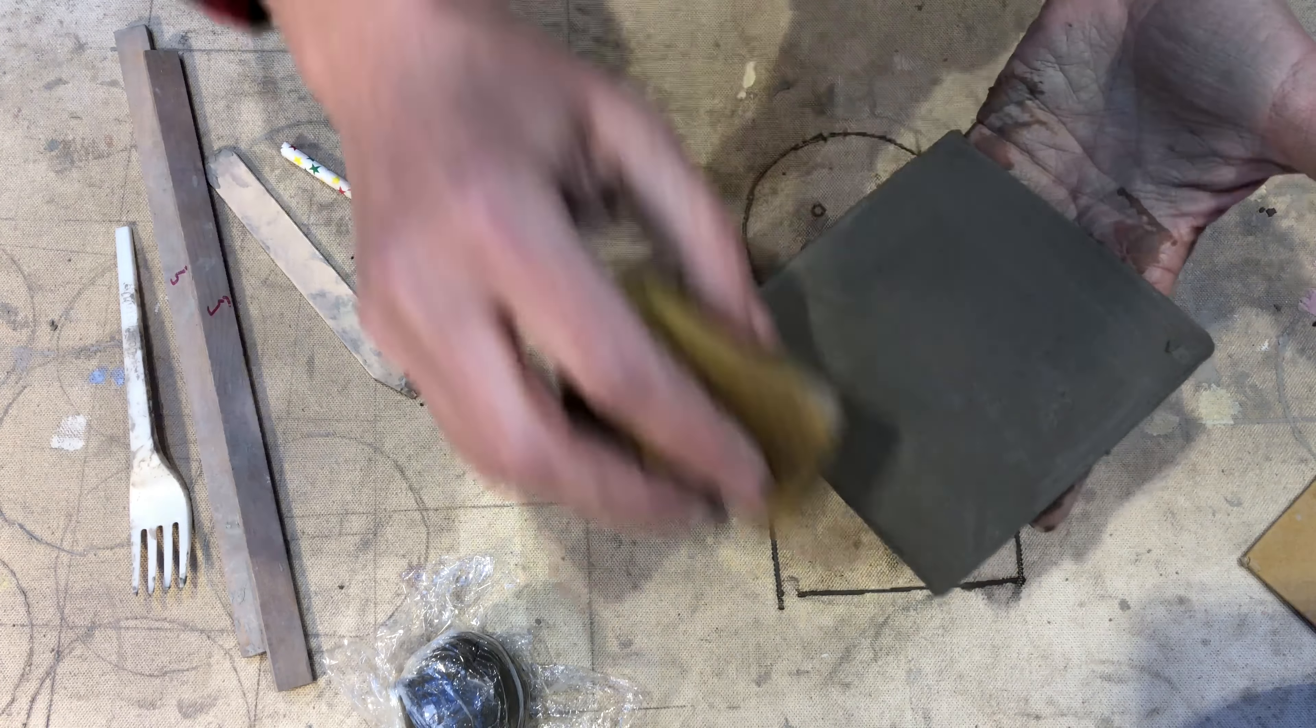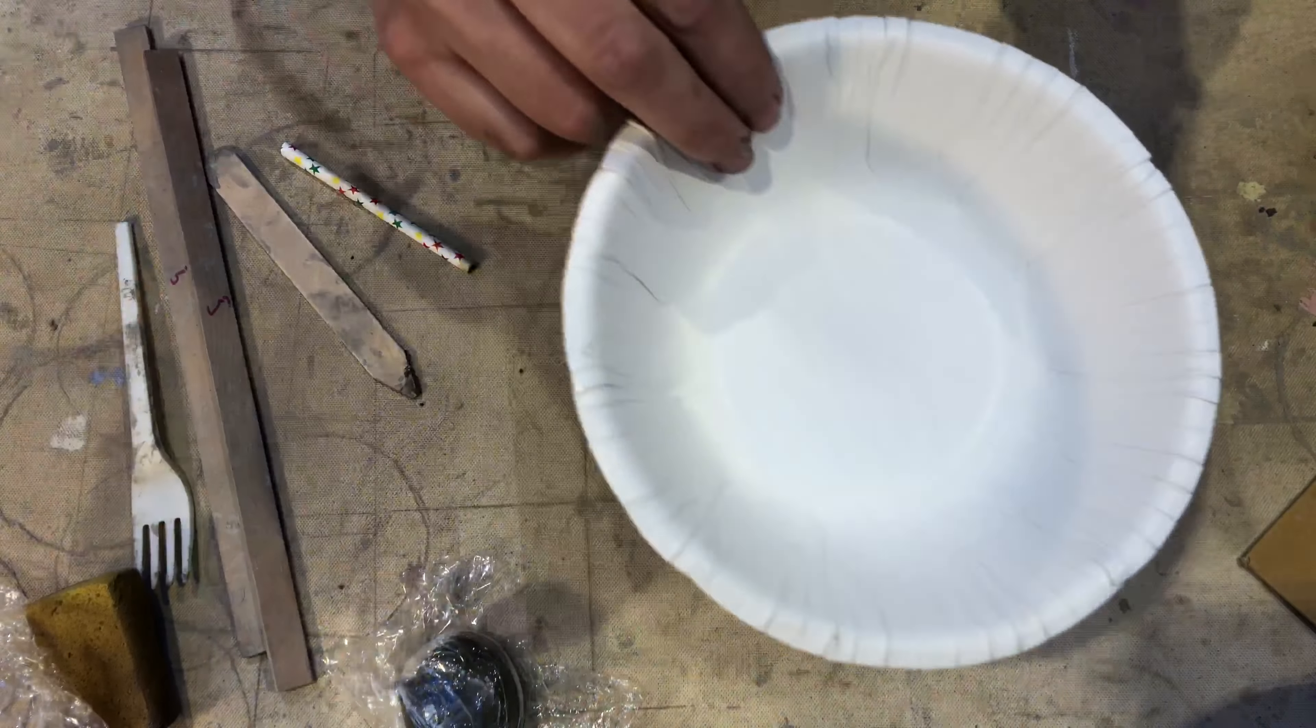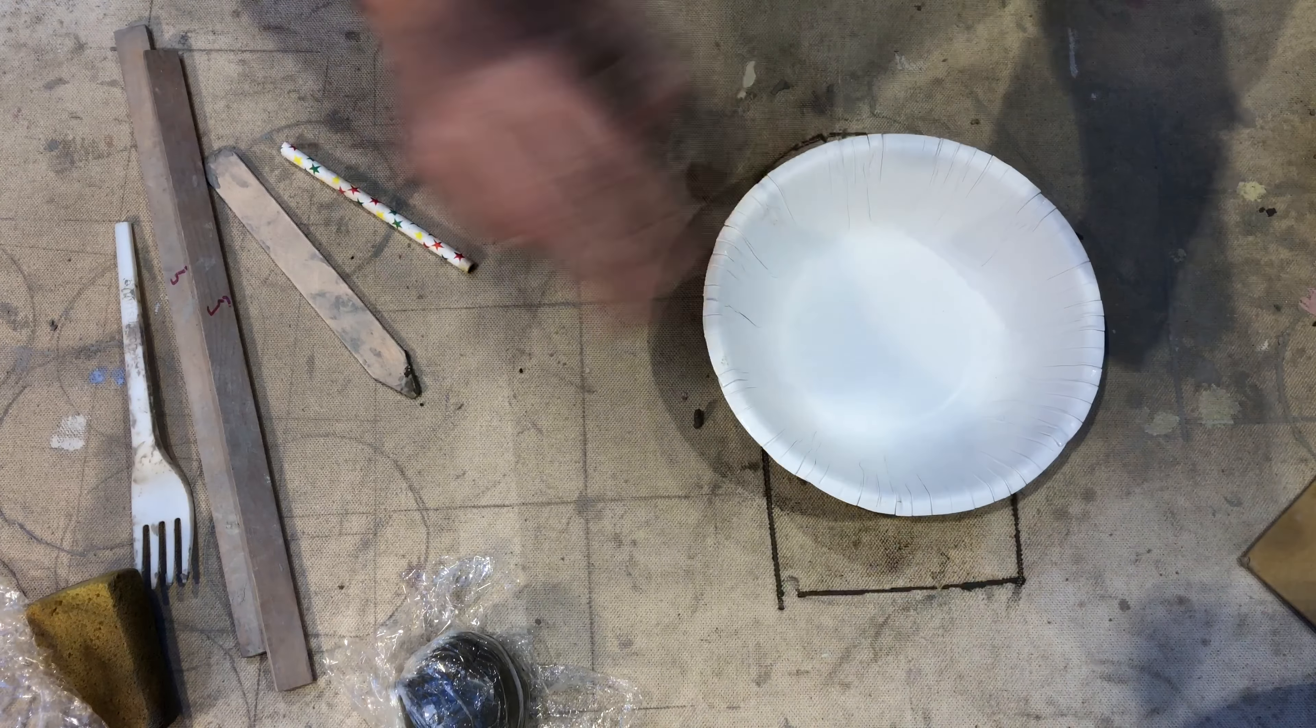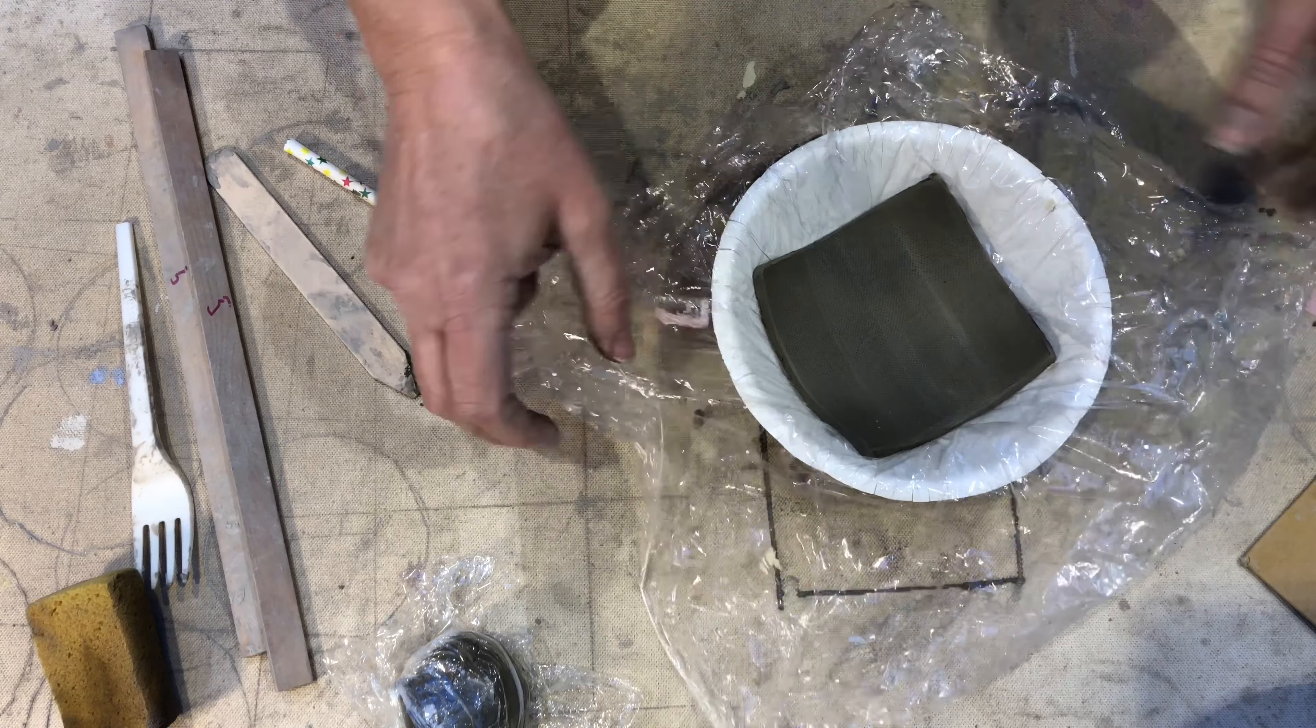Again using the slightly damp sponge to smooth off the edges and any textures, top and bottom. This one I'm going to use a slightly shallower bowl, lined with cling film again and I plop a piece of clay in there.